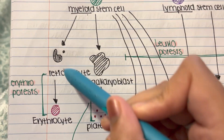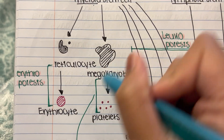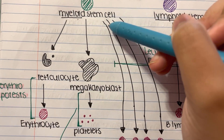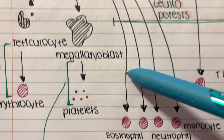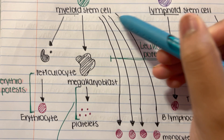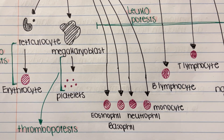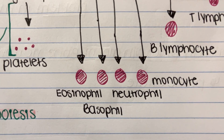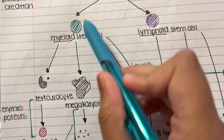For the remaining cells, there's no intermediate step — they go straight from the myeloid stem cell. The myeloid stem cell can also produce an eosinophil, a basophil, a neutrophil, and a monocyte. These are all specific types of white blood cells. We're just focusing on where they stem from right now.